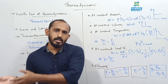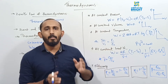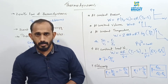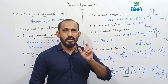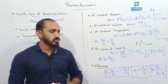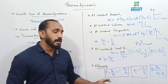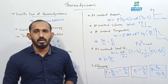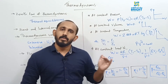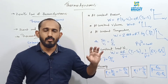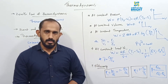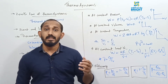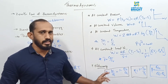The efficiency of a heat engine is the ratio of work done to heat absorbed: efficiency = W/Q1 = 1 − Q2/Q1, where Q1 is the heat absorbed from the source and Q2 is the heat released to the sink, a reservoir at low temperature.